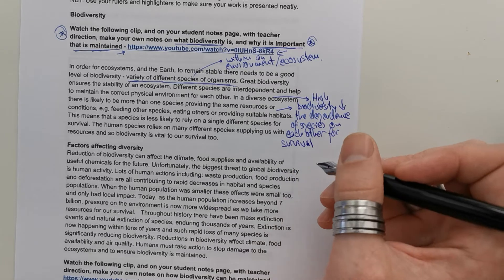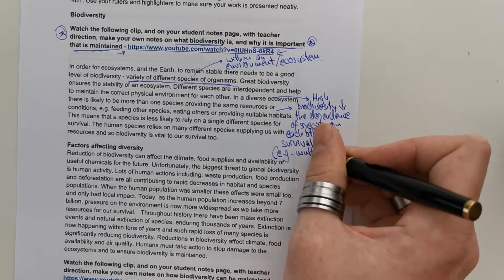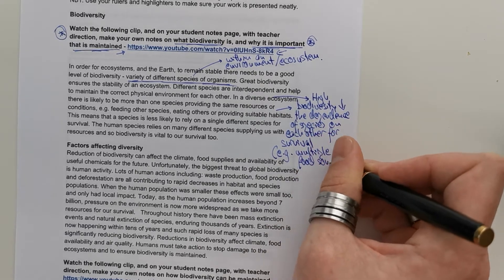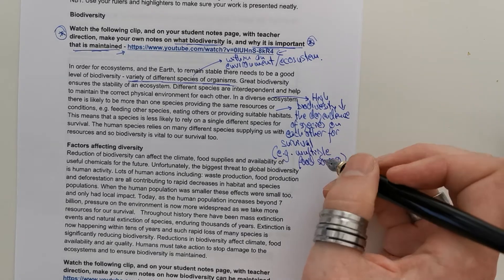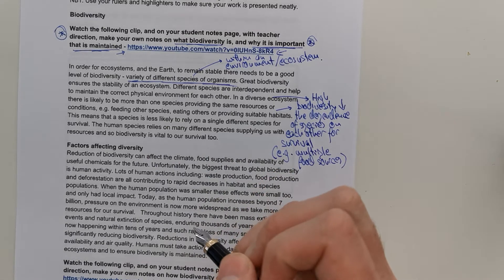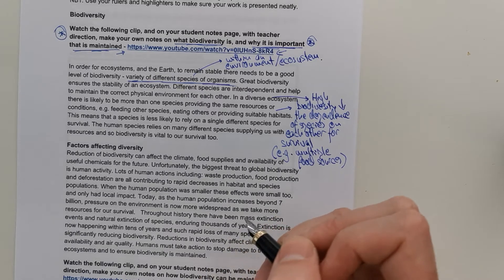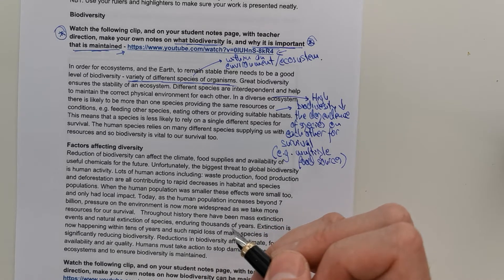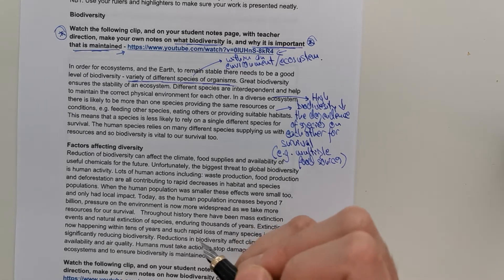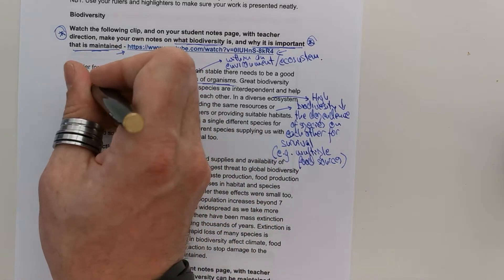High biodiversity reduces the dependence of species on each other for survival. So, for example, it might allow a species to have multiple food sources rather than just one. This means species is less likely to rely on a single species for survival. The human species relies on many different species supplying us with resources, and so biodiversity is essential and vital to our survival.